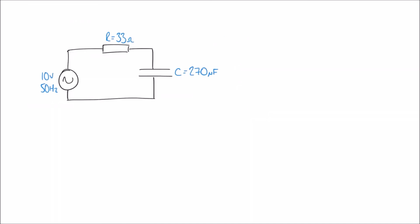Let's look at one more example — this time a resistor in series with a capacitor. Capacitors also produce reactance in AC circuits, but the formula is slightly different: XC = 1 / (2πfC). Calculating the reactance of this capacitor: 1 / (2π × 50 × 270 microfarads, i.e., 270 × 10⁻⁶) gives an answer of 11.79 ohms.